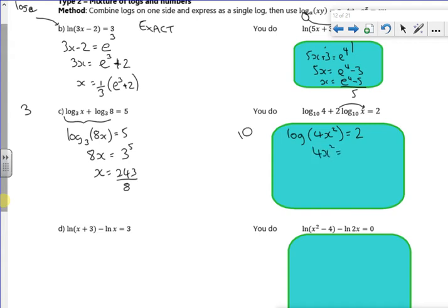So 4x squared is 10 to the power of 2. So that's 100. So x squared is 25. x is plus or minus 5. Now I've got a slight problem here with the logs that we mentioned before. Because a log graph, which is a reflection of e to the x, only works for x is greater than 0, and that's a cheat, then as x is greater than 0, x is just a plus 5.